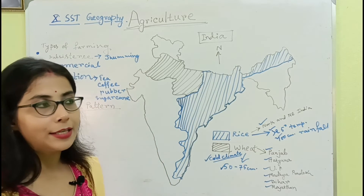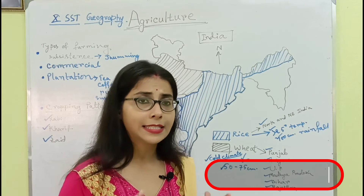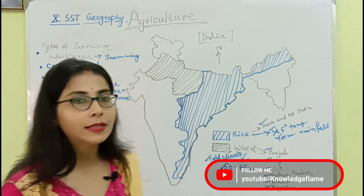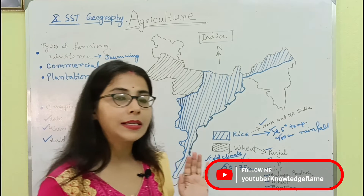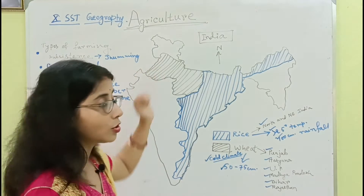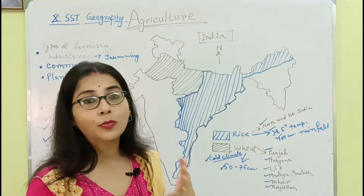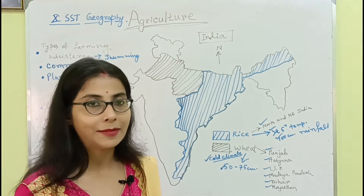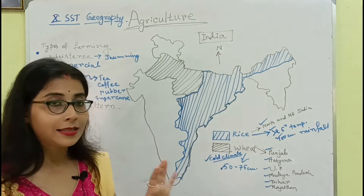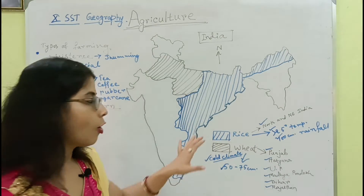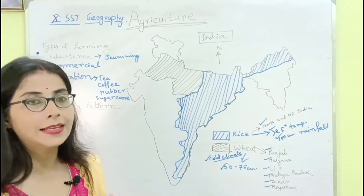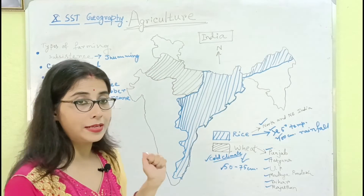For example, rice is the staple food of West Bengal and Orissa, so farming done for personal consumption is called subsistence farming. But the farmers of Punjab and Haryana produce rice for commercial purposes — they sell it. That's why rice is the subsistence crop for the Orissa and West Bengal zone, but a commercial crop for the Punjab-Haryana zone.